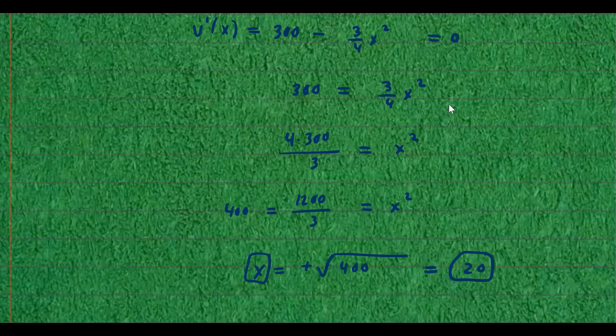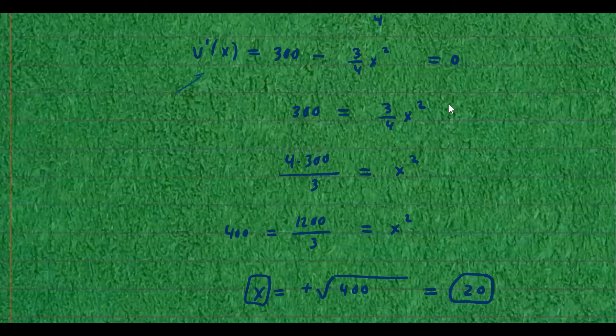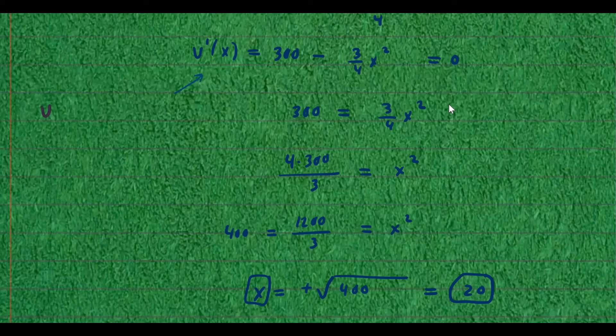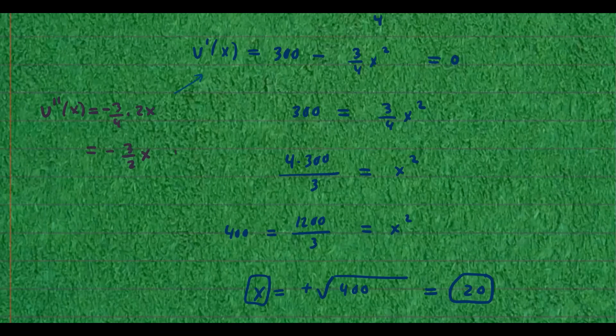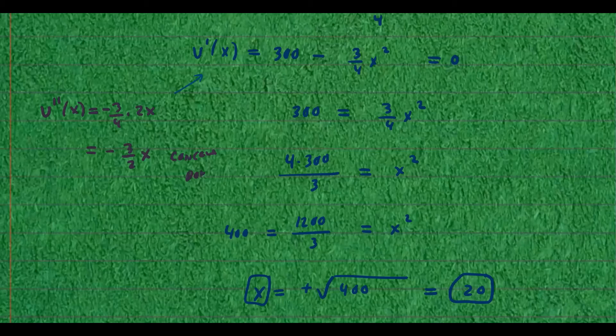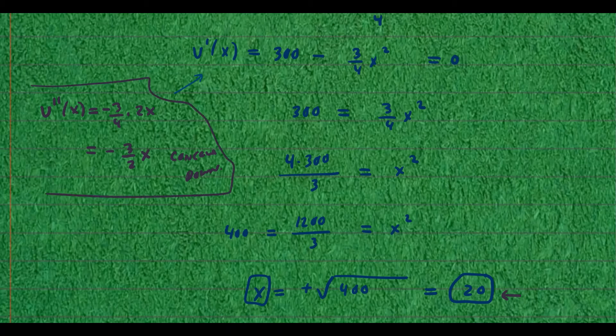Now will this give us the largest volume? Well, let's check. So we check the second derivative. So here's the first derivative. Now let's take its second derivative. So the second derivative is going to be 3 fourths times 2x negative. And that's going to be negative 3 over 2x. So if you test its concavity, this function is always concave down, which means this critical number will give us the maximum volume. So that's good. So that's a side note for us to verify that this will give us the maximum largest value possible.